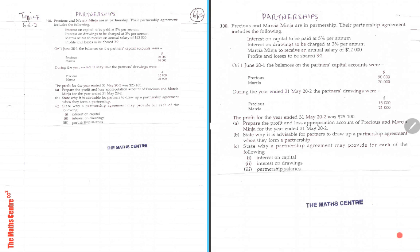Interest on capital is 5%. Interest on drawings is 3%. Marsha gets an annual salary of $12,000. Profits and losses are shared 3 to 2 — that means Precious gets 3 parts and Marsha gets 2 parts of the total profits or losses. The balance on the partners' capital accounts are given for Precious and Marsha. During the year, the partners' drawings were Precious $15,000 and Marsha $21,000.